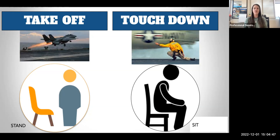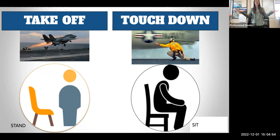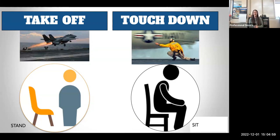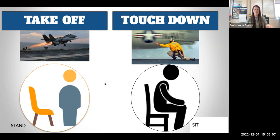What you would do is say, 'Okay students, when I say take off, everybody's going to stand up.' That's their signal — take off. You might have to modify this if you have students in wheelchairs. You can modify and do take off and touchdown with hand signals as well.